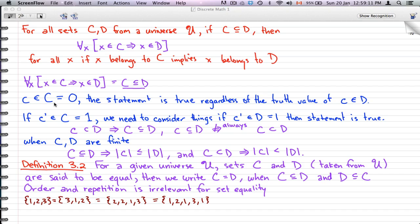C belongs to C is false. Then the statement is true, regardless of the truth value of C belonging to D, because it is a subset.